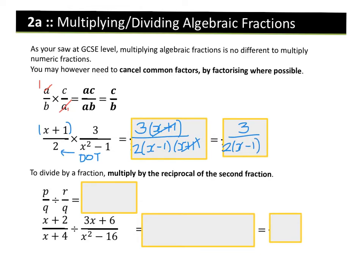When dividing a numeric fraction, we flip the second fraction — find its reciprocal — and multiply the two together. So p/q ÷ r/q becomes p/q × q/r. We can cancel out the q's, giving a final answer of p over r.